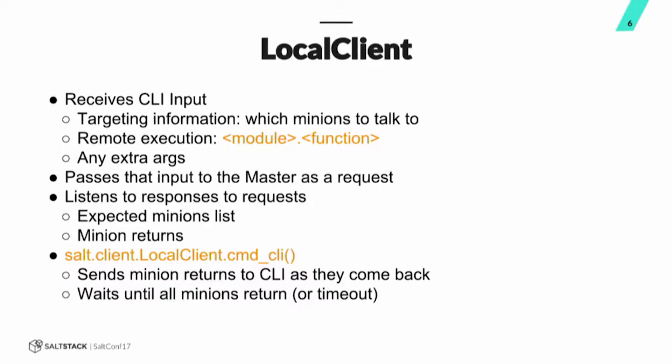We've already defined what the CLI does — it's pretty basic, just a wrapper — because most of the work is being done at the local client level. It takes that CLI input, the targeting information — what minions are we targeting; in this case that would be my-minion — then it takes that remote execution bit, the module.function, test.ping, and any extra arguments. Test.ping doesn't have any extra arguments, but if we did, that would also be wrapped up here and passed to the master. So it makes a request to the master to say hey, we've got some work to do. And then after that, it is basically just listening to responses to the requests that it makes.